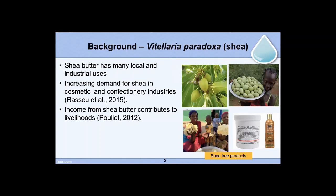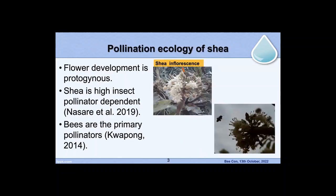Income from Shea Parklands contributes largely to the livelihood of the people who live within the parklands. Regarding the pollination ecology of Shea, the flower development is protogynous. Shea is highly insect-pollinator dependent. In a paper in 2014, I did the research and found that bees are the primary pollinators of Shea.